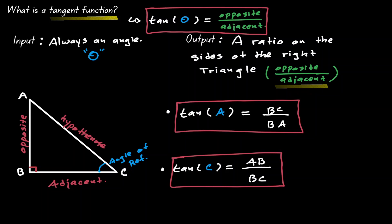So we have to find the tangent of angle C. Notice that the ratio changes depending on what angle we plug in to the tangent function.